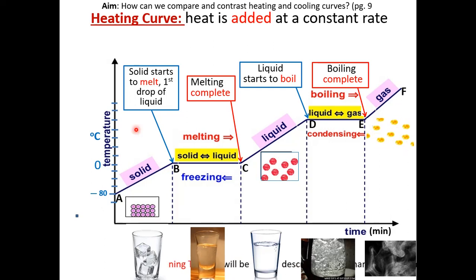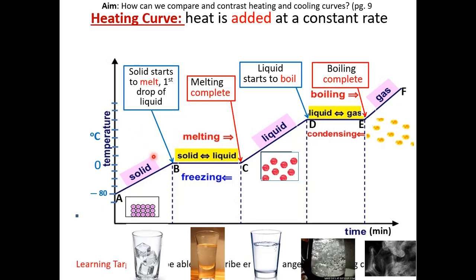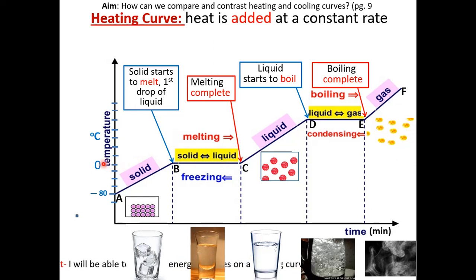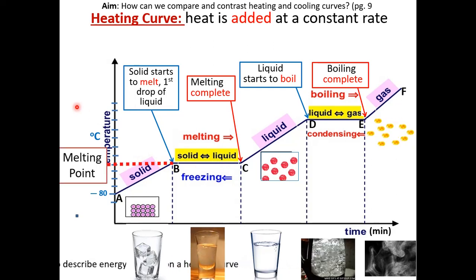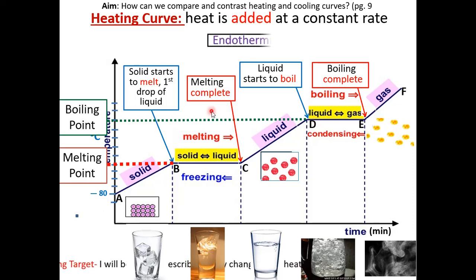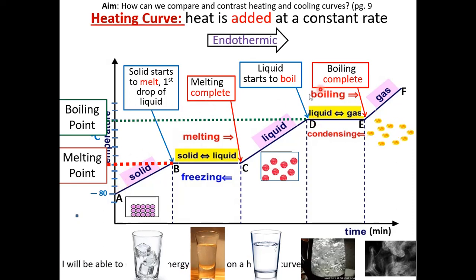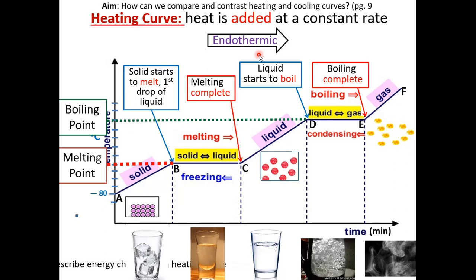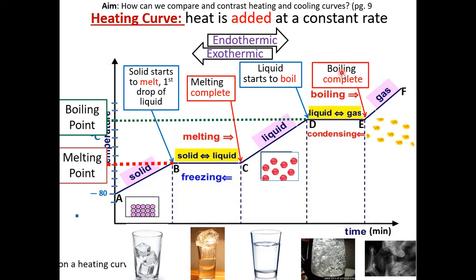The melting point of the substance is the temperature at which melting occurs — that is the temperature at that flat line segment. The boiling point is the temperature at which the substance is boiling, at the temperature of that line segment. From left to right, from point A to point F, it is endothermic because heat is being added at a constant rate. So the opposite direction will be exothermic in the heating curve.